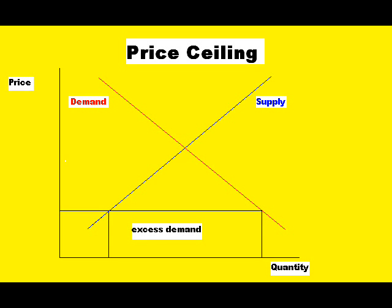Here is what a price ceiling looks like. You'll notice that the demand and supply curve intersect at a specific point. This point is known as equilibrium, where demand is equal to supply, allowing the market to clear. However, governments feel that prices can be too high for customers if they have to pay the equilibrium price for a particular good. Therefore, they implement a price ceiling, which is a limit on the amount suppliers can charge. The price ceiling is set below the equilibrium price.